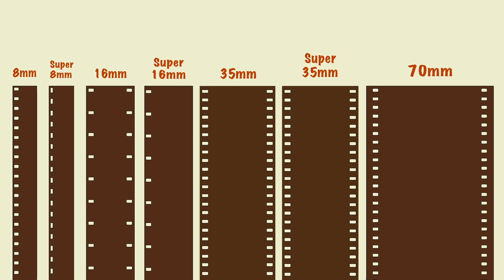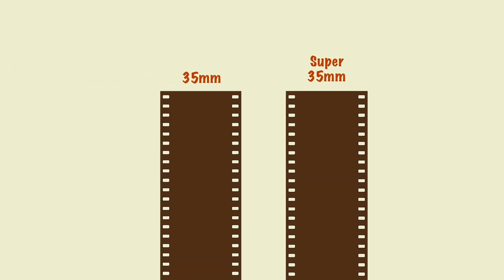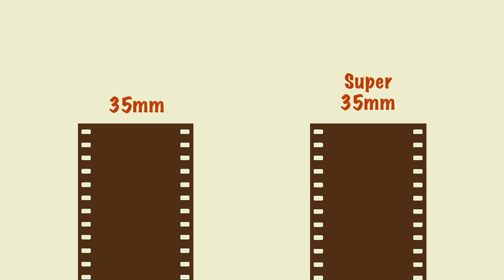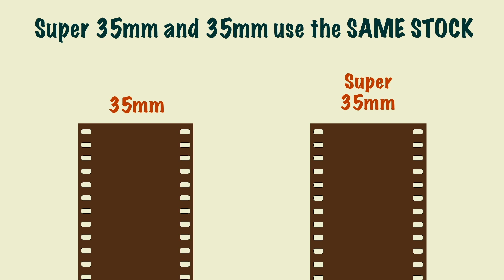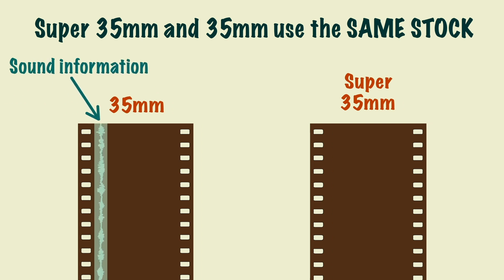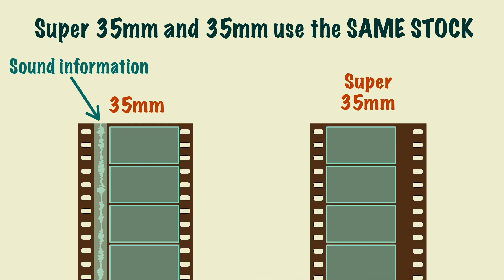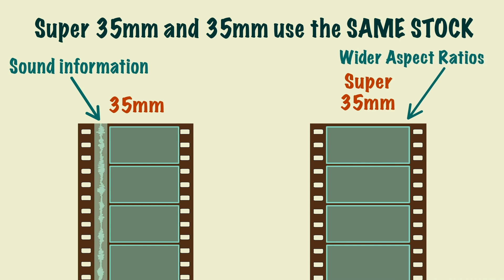Film gauges start from 8mm and go all the way to 70mm. However, the most commonly used film gauge is 35. Unlike 16mm, Super 35 and 35 use the exact same stock. The only difference between them is that 35 allows a section of the film for sound information, but Super 35 doesn't, and this extra space can then be used to allow for wider aspect ratios.